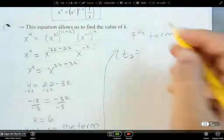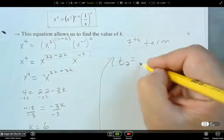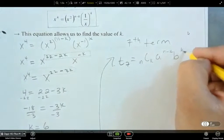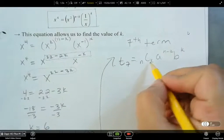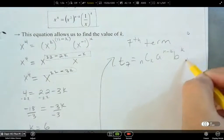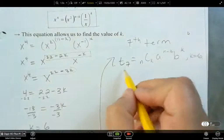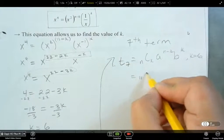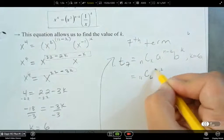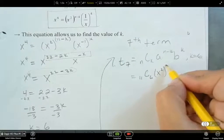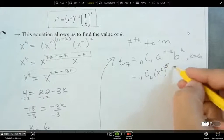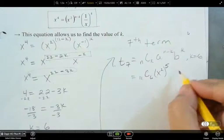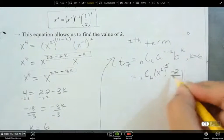So t7 is, now I'm going to use n c k a to the power of n minus k. I'm going to use the whole thing. So k in this case is, k is 6, right? Because this is k plus 1. So n is 11, and then c 6, x squared to the power of 5, and then b to the power of, oh I guess I should write what b actually is, negative 2 over x to the power of 6.